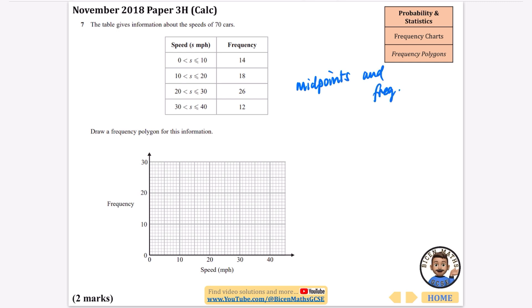Now the midpoint of 0 and 10, I'm just visually going to look at these things on the diagram, these are the midpoints that I have just drawn, 15 sorry 5, 15, 25, and 35. And we're just going to do the frequencies and it's one square per one frequency, so it is going to be 14 and then 18, 26, and 12.